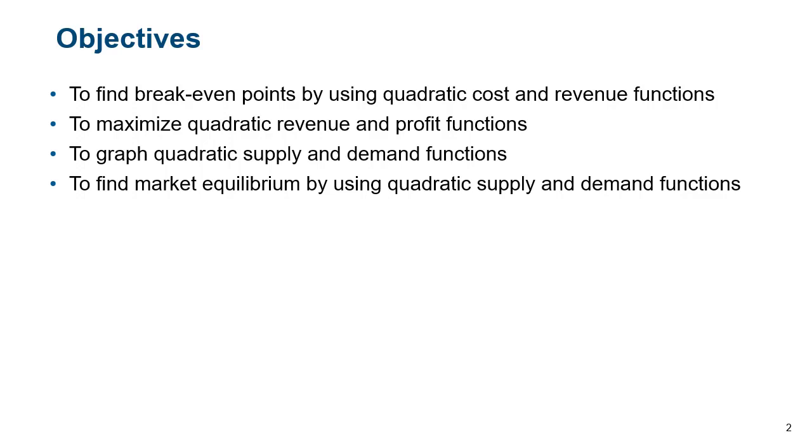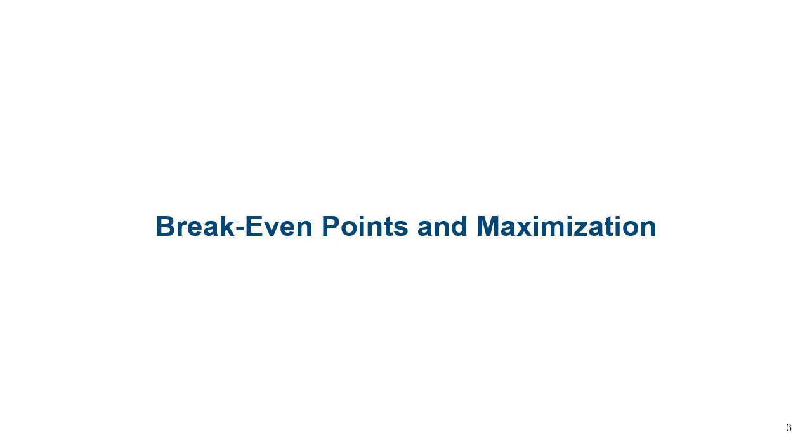Since we're always wanting to know when we break even with things, when cost and revenue are equal, we can use quadratics that way. We want to be able to maximize revenue or profits, so being able to find the max of a quadratic is helpful. You can graph quadratic supply and demand functions and then find market equilibrium points by basically finding where they intersect.